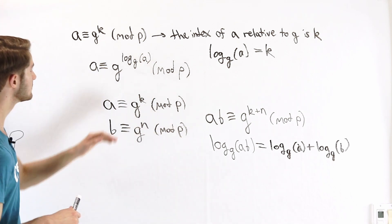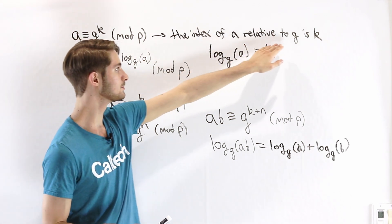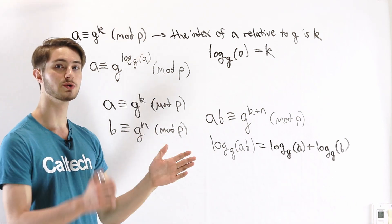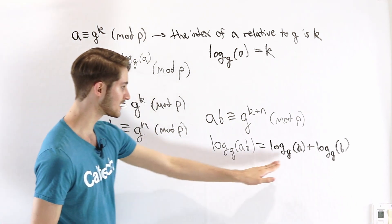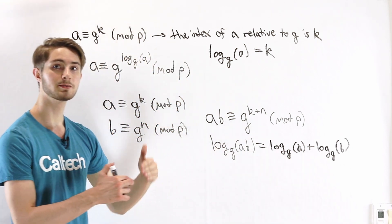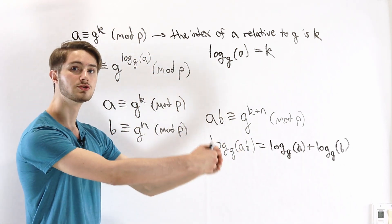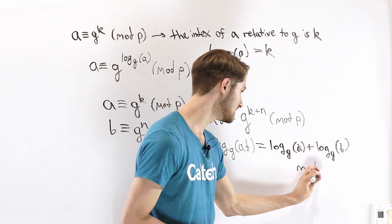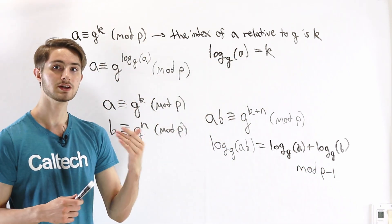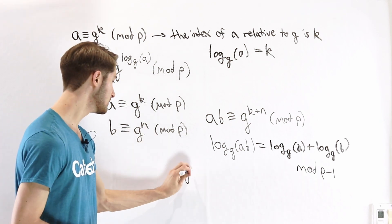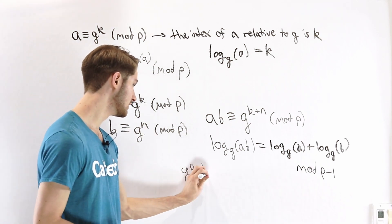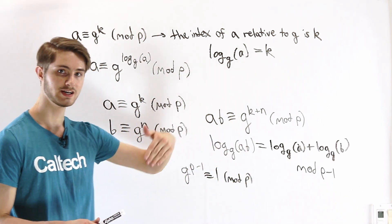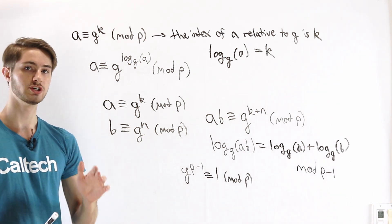When we talk about indices of a number relative to some primitive root, we often specify that the index has to be between 0 and p minus 1. So if we do some kind of index addition and get a number greater than p minus 1, we reduce it mod p minus 1. So really the answer here would be log of a plus log of b, mod p minus 1. We can do that because by Fermat's little theorem, g to the p minus 1 is always congruent to 1 mod p, so subtracting p minus 1 from that exponent won't change our answer.